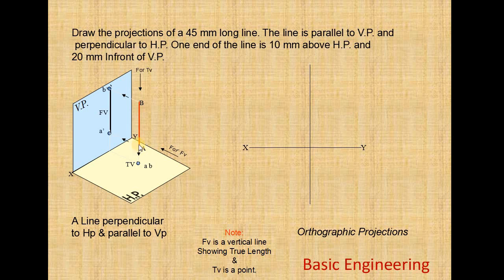First we draw point A'. The above distance is 10mm from the XY line, so point A' is 10mm from the XY line. Now we draw from A' to B'. The length of the line is equal to the true length of 45mm, so from A' to B' is 45mm.